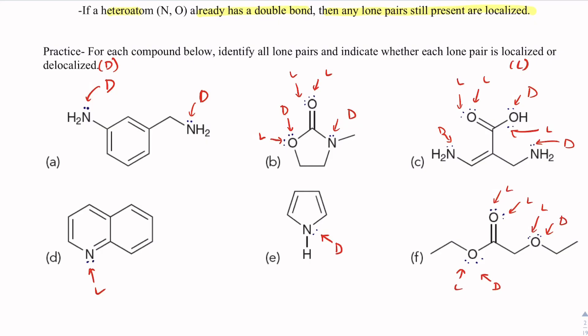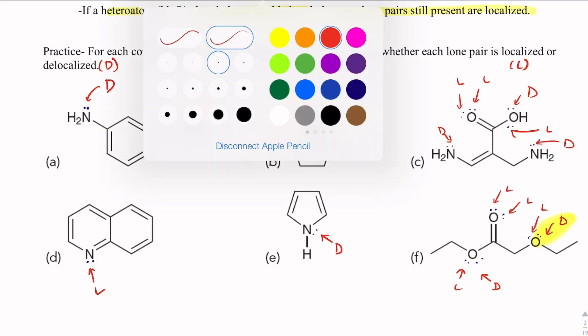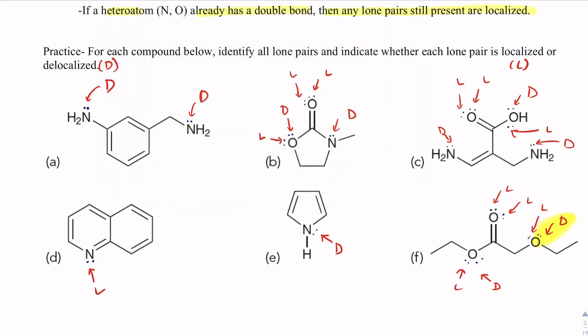Now, one thing that you're going to learn is that even though this pair of electrons are delocalized, it's too far away from any double bond to actually resonate. So it's delocalized, meaning that it could move, but it won't actually move.